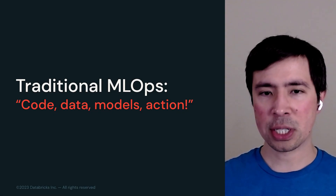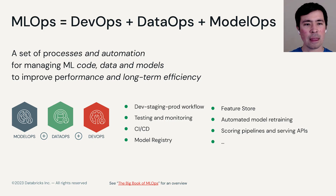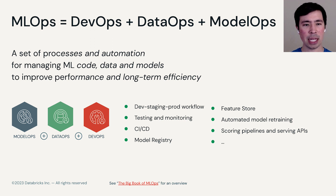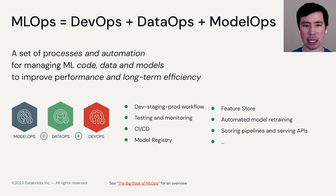Let's quickly cover traditional ML Ops. I like to define ML Ops as DevOps plus Data Ops plus Model Ops. That means a set of processes and automation for managing ML assets like code, data, and models to improve performance and long-term efficiency — two goals from the last video.